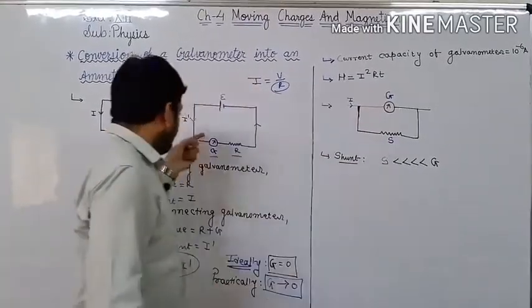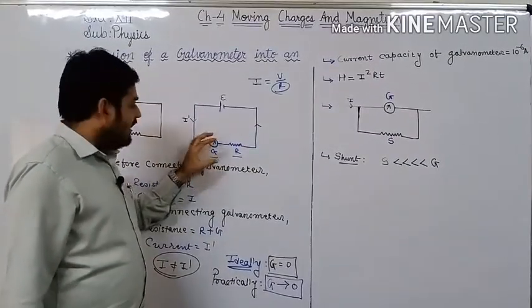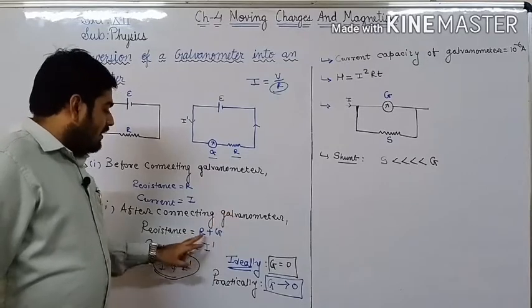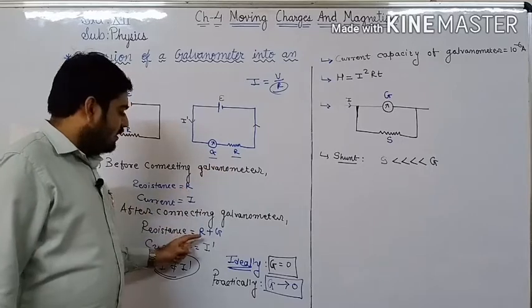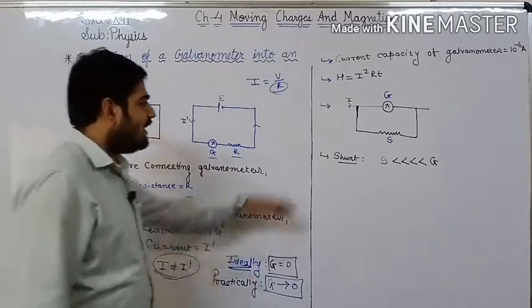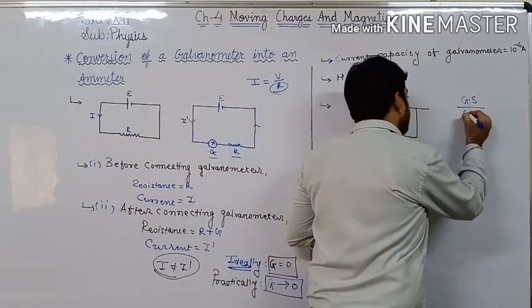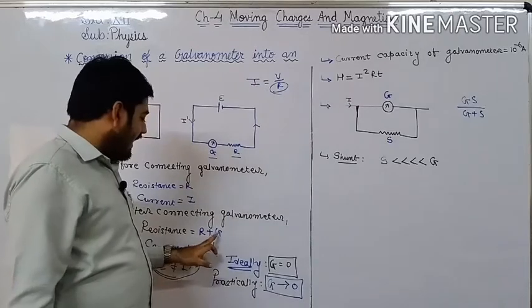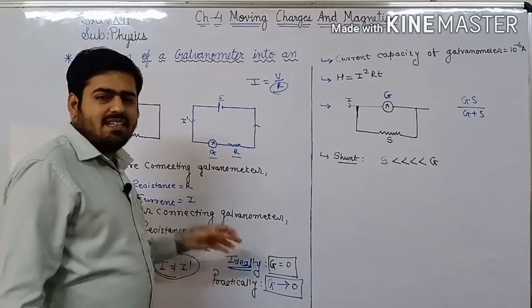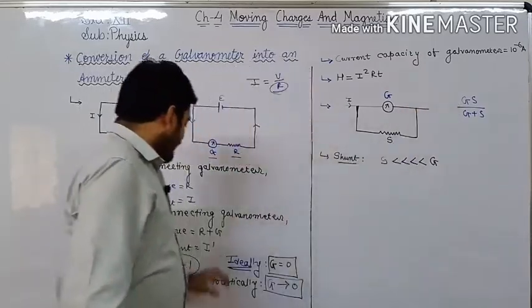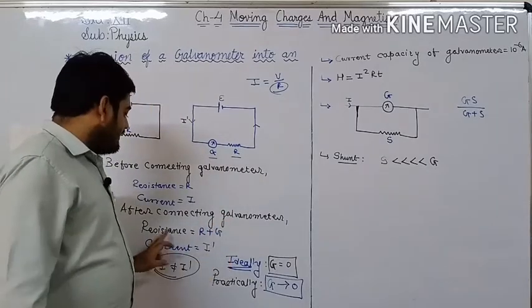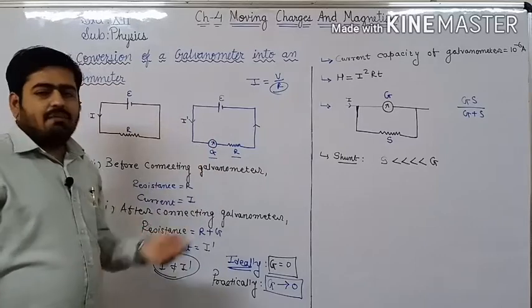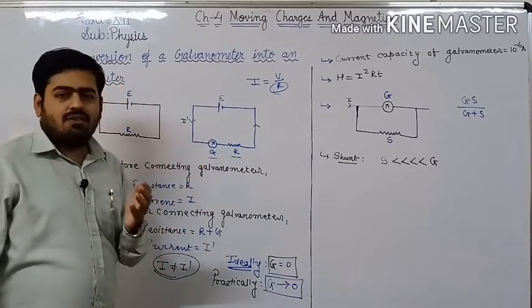Here shunt S is very much small in comparison to resistance of galvanometer G. If S is very small in comparison to G, then effective resistance of these two will be very small. The formula for parallel combination is G×S/(G+S). If shunt is connected in parallel, total resistance formula becomes R + G×S/(G+S). Since G×S/(G+S) is very small, you can neglect it. So resistance will be nearly same, same amount of current will flow, and we can measure almost accurate value of current using ammeter.